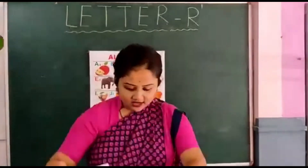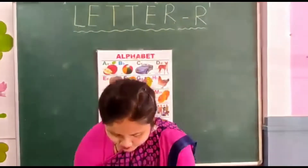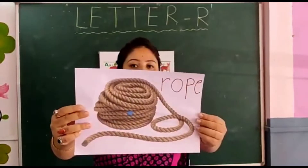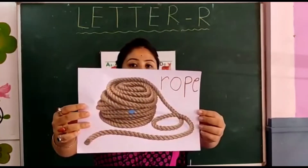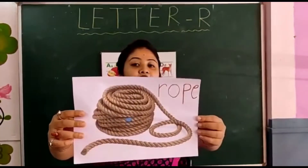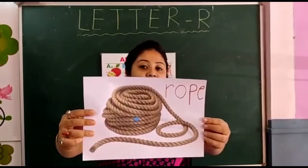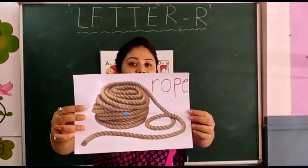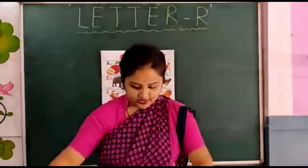Our next is row. R for row. R-O-B-I-T. Row. R-O-B-I-T. Row.